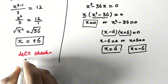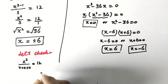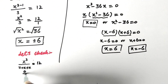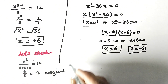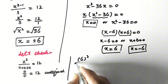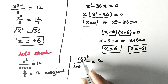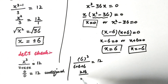Now let's verify our answer. Our original equation is x cubed over x plus x plus x is equal to 12. When x equals 0, it gives 0 over 0 equals 12, which is undefined. When x equals 6, it will be 6 cubed over 6 plus 6 plus 6 equals 12, and 6 cubed is 216 over 18, which equals 12.